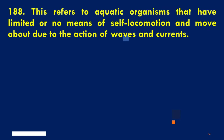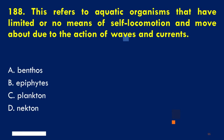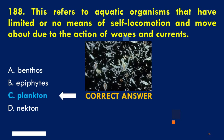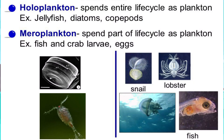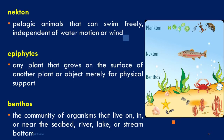This refers to aquatic organisms that have limited or no means of self-locomotion, and move about due to the action of waves and currents. A. Benthos, B. Epiphytes, C. Plankton, D. Nekton. The correct answer is C. Plankton. There are two types of plankton: holoplankton, which are planktonic all throughout their life cycle, and meroplankton, which are planktonic only in some part of their life cycle. Nekton are pelagic animals that can swim freely, independent of water motion or wind. Epiphytes are plants that grow on the surface of another plant or object merely for physical support. Benthos are the community of organisms that live on, in, or near the seabed, river, lake, or stream bottom.